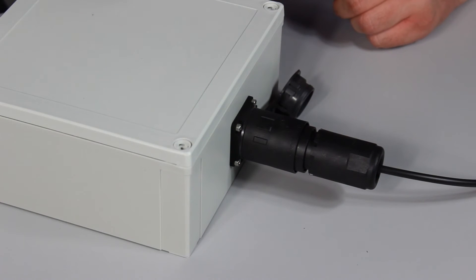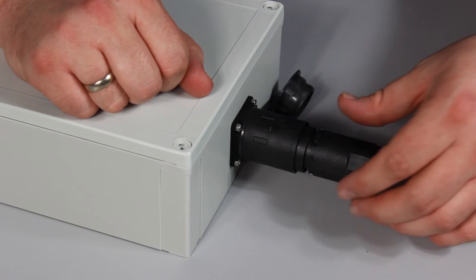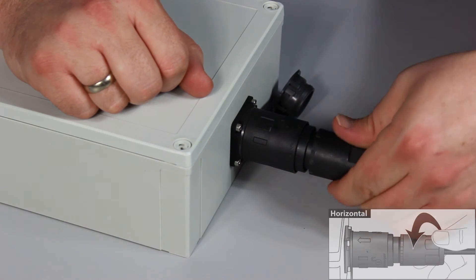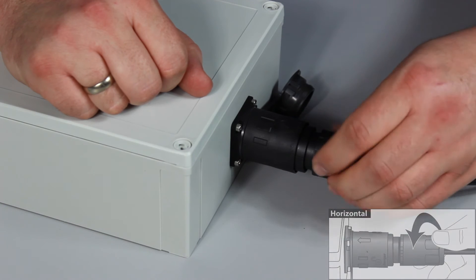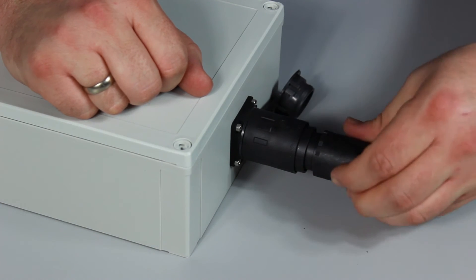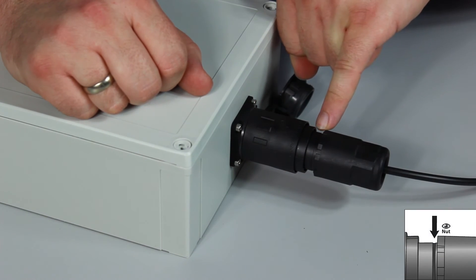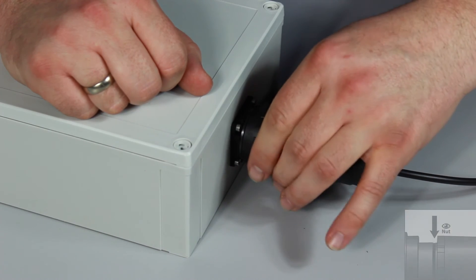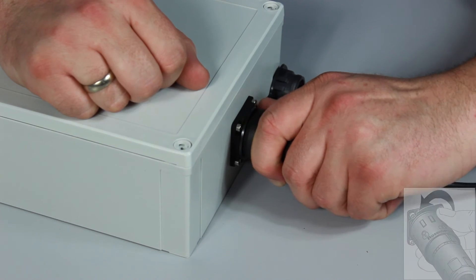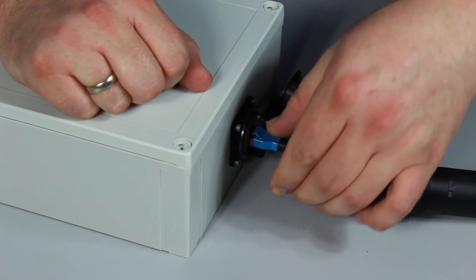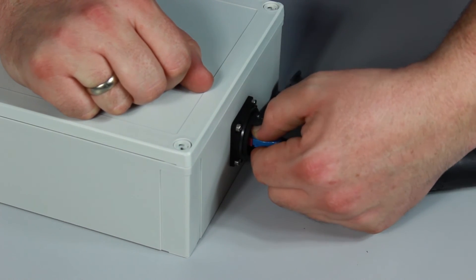Removing the fiber enclosure is also straightforward. What we want to do is loosen our cap nut far enough so that we can see the chamfer. Then we unlock the locking nut and remove the fiber enclosure, and then our cable.